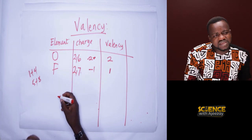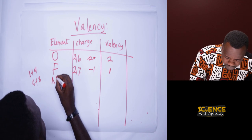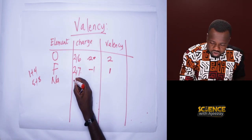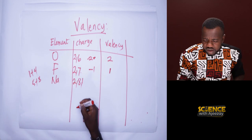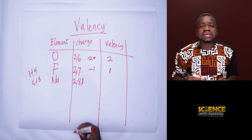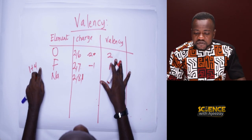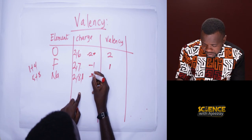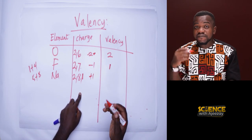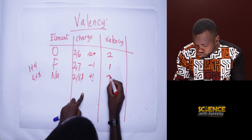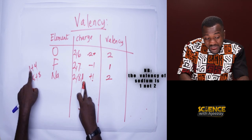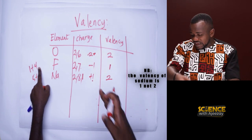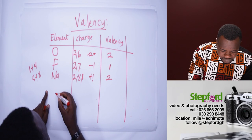Let's take sodium (Na). Sodium's configuration is 2, 8, 1. This single outer electron makes sodium unstable, so it will give it out. When it gives out that electron, it becomes positive — so the charge is plus one. The valency is this number, which is one. Since one is between one and four, the valency is just one — whichever way you look at it, it's the number attached to the charge.